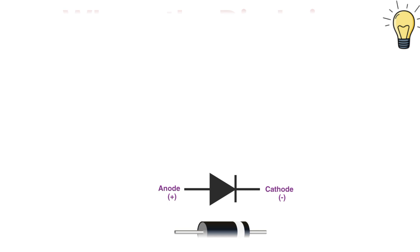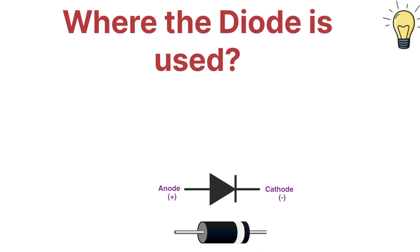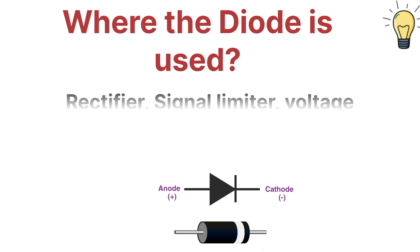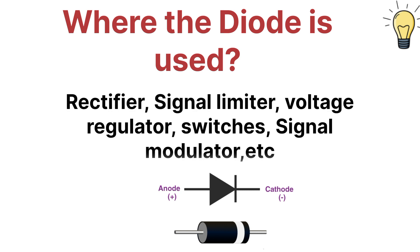The next point is where we can use the diode. A diode can be used as a rectifier, as a signal limiter, in voltage regulators, in switches, and as a signal modulator. These are the uses of a diode.